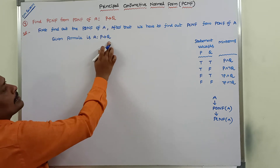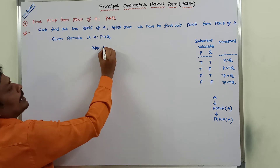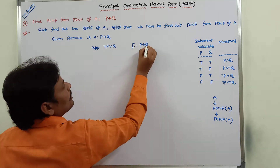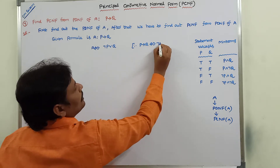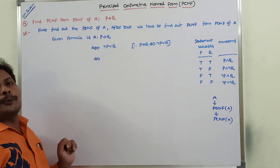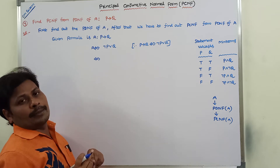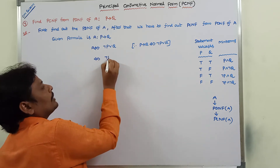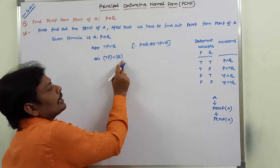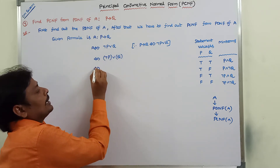The given formula A is P conditional Q. P conditional Q can be written as negation P ∨ Q. We already know that P conditional Q is logically equivalent to negation P ∨ Q. Now we have to find out the PDNF, which is the sum of minterms. I am writing negation P ∨ Q, but here it is not yet a minterm, so to convert this into minterms, I have to write it in a specific way.